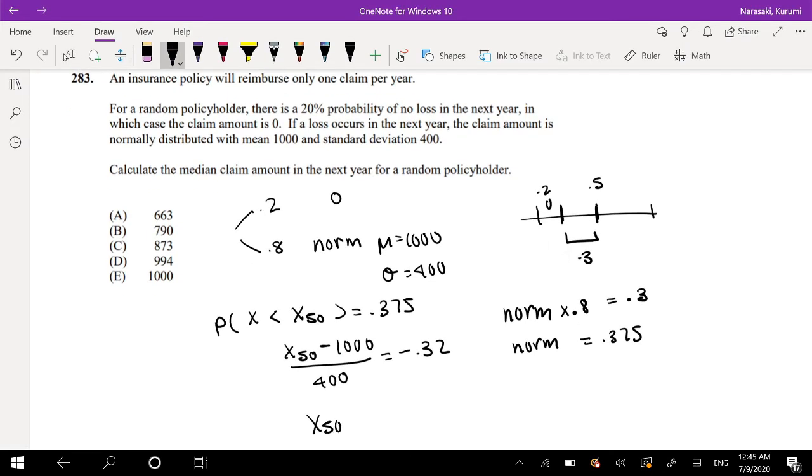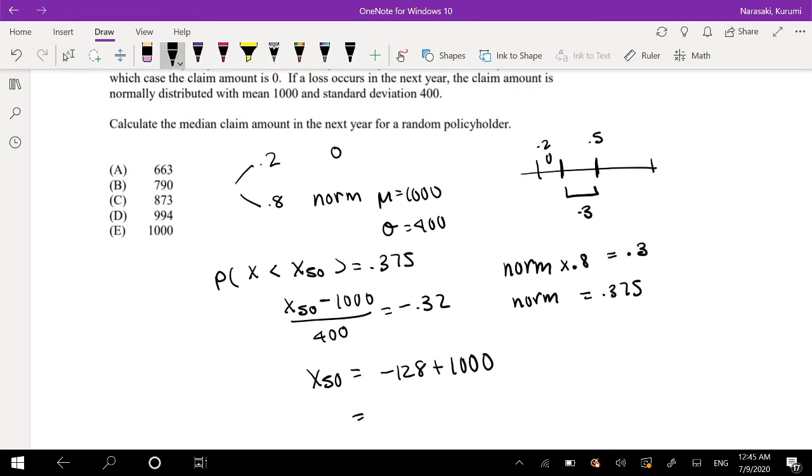So we get x50 equals negative 0.32 times 400, which is equal to negative 128 plus 1000, which is equal to 872, which is approximately equal to 873.